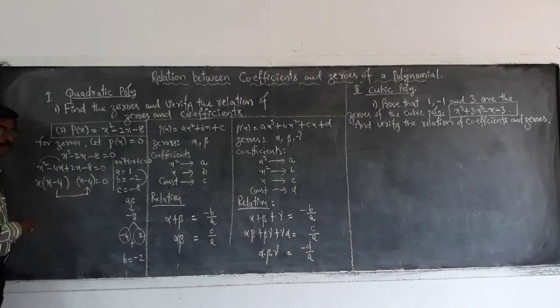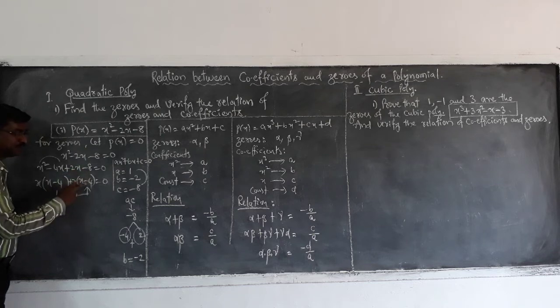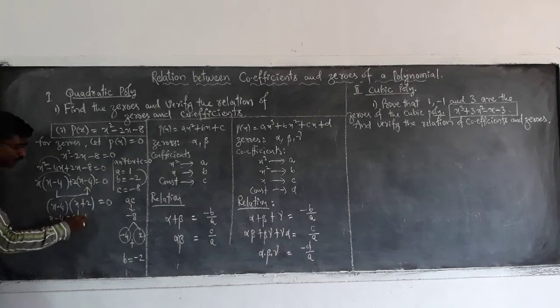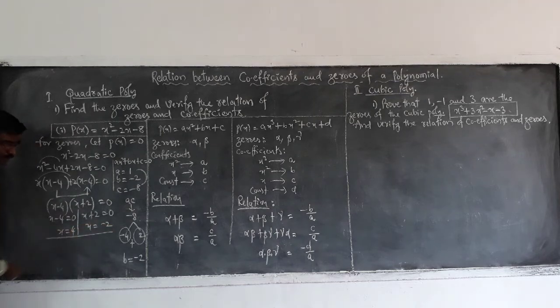And this blank to be filled with a factor from these two. So then already x is here. So it is compulsory to take plus 2. Then you will get plus 2x and 2 times 4 is 8 with minus. Then again taking minus x minus 4. Then you will get x plus 2 equal to 0. So now separating these two you will get x minus 4 equal to 0, x plus 2 equal to 0. So finally x equal to 4 and x equal to minus 2. So here zeros are 4 and minus 2.